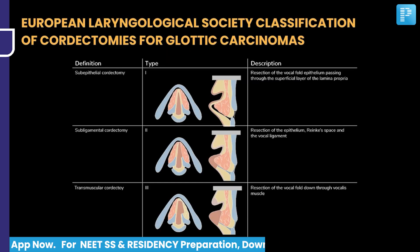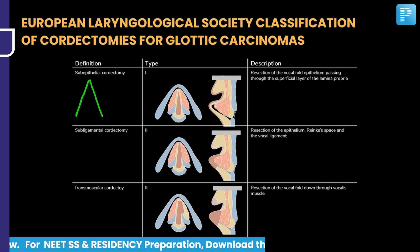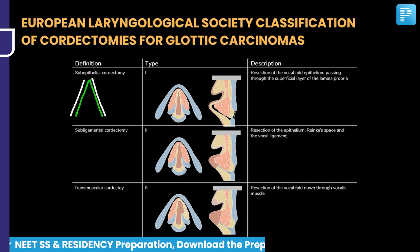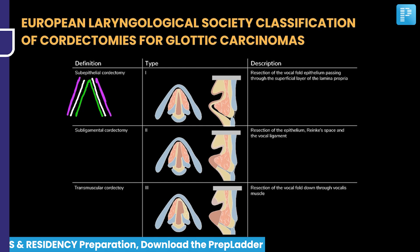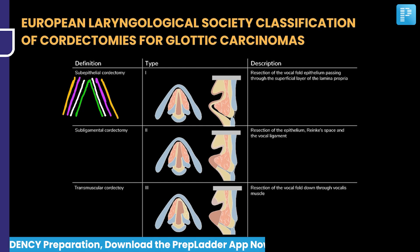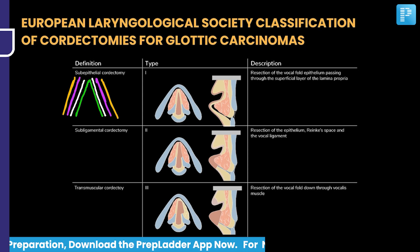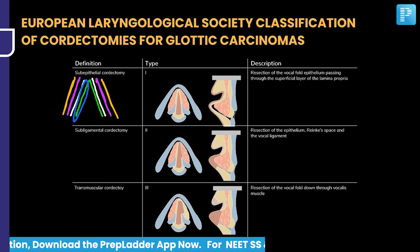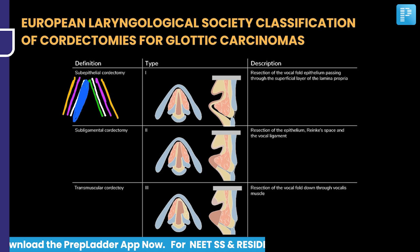If we take the vocal cord — let me draw it here. We have got the epithelium, then the superficial lamina propria. The intermediate and deep layers form the vocal ligament, and last we have the vocalis muscle. Sub-epithelial chordectomy means you are resecting the vocal fold superficial to the lamina propria — only the epithelium is resected. This is called sub-epithelial chordectomy.